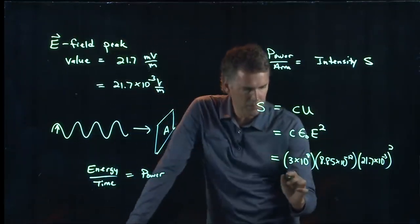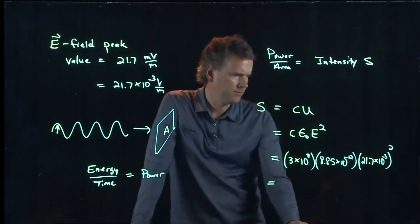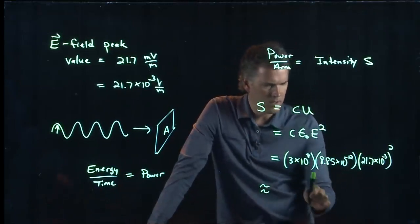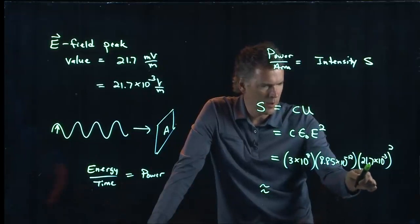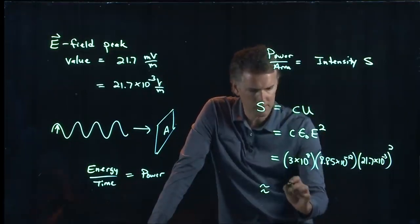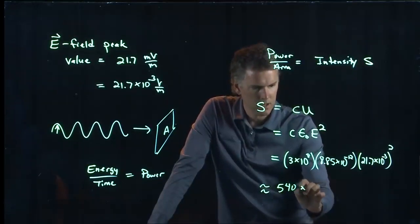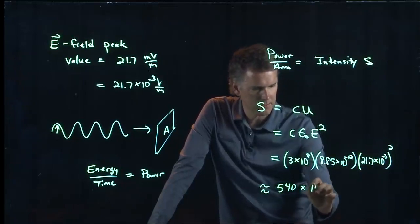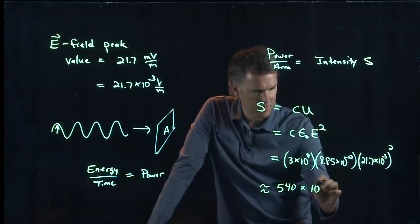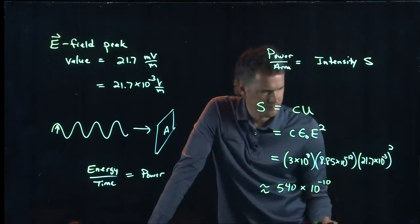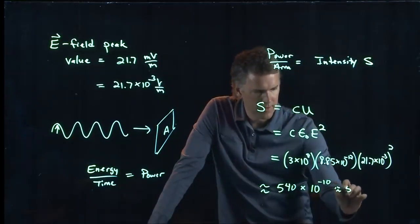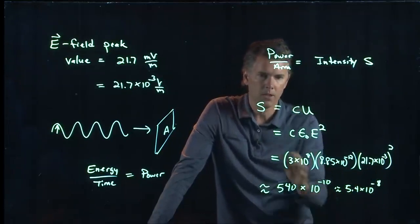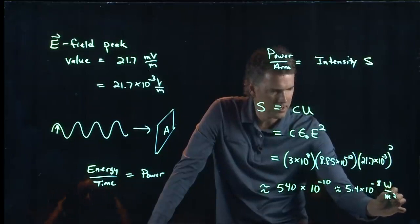If you punch in all those numbers into your calculator, tell me what you get and I will approximate it right here. So we've got 3 times 9 times 20, that's 60 times 9, which is 540. Then we've got 10 to the 8th with 10 to the minus 12, so that's 10 to the minus 4, and then 10 to the minus 6, so that becomes 10 to the minus 10. This is 5.4 times 10 to the minus 8, and the units are SI units, watts per square meter.